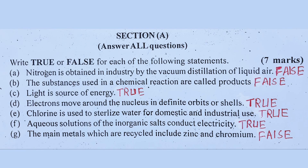Number 1: Electrons revolve around the nucleus in definite orbits or shells. Chlorine is used to sterilize water for domestic and industrial use.